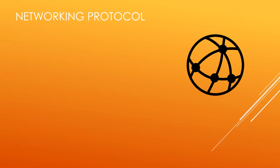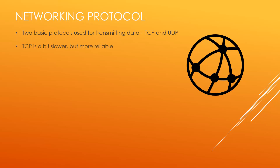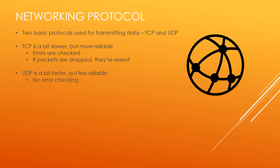First we should talk about the protocol, the lower level of networking. The two most common protocols are TCP and UDP — you've probably heard of them, they work over IP. TCP is a little bit slower but a lot more reliable because it has error checking and packet drop checking, so if packets are dropped they're resent. UDP doesn't have this, so it's a little bit faster because there's less overhead, but it's less reliable — there's no error checking and packet loss is entirely possible.